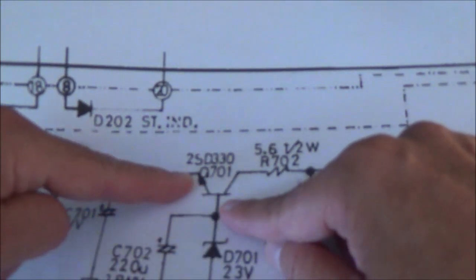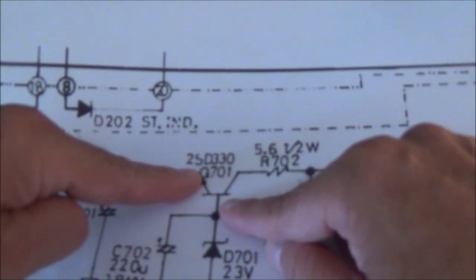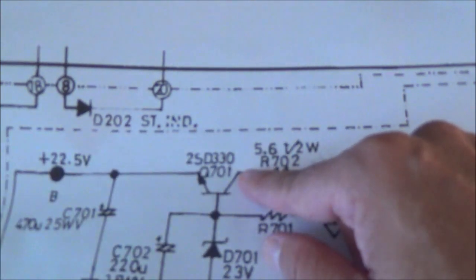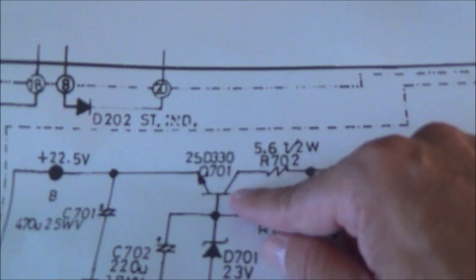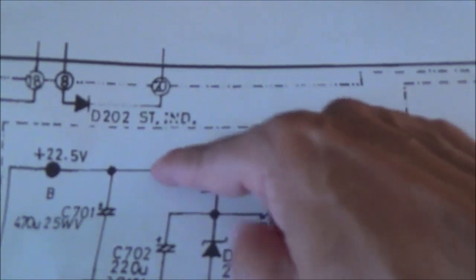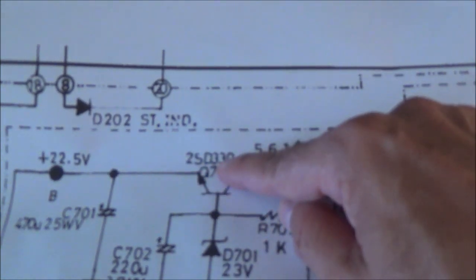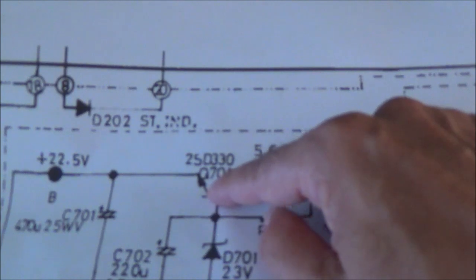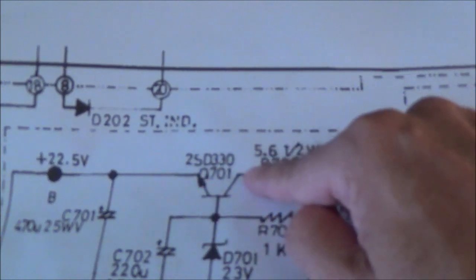And that means the transistor is going to pass more current, and of course that's going to decrease the collector emitter resistance. And when the load decreases, the emitter voltage is going to go up, and that in turn decreases the base emitter voltage or the base emitter bias, and so the transistor is going to pass less current, basically then increasing the collector emitter resistance.